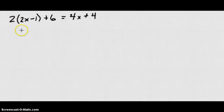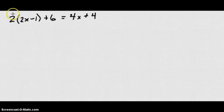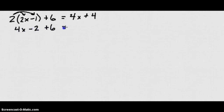There's also another interesting case. We have 2 times the quantity 2x minus 1, plus 6, equals 4x plus 4. To simplify this, we'll distribute the 2. We get 4x minus 2 plus 6 equals 4x plus 4.